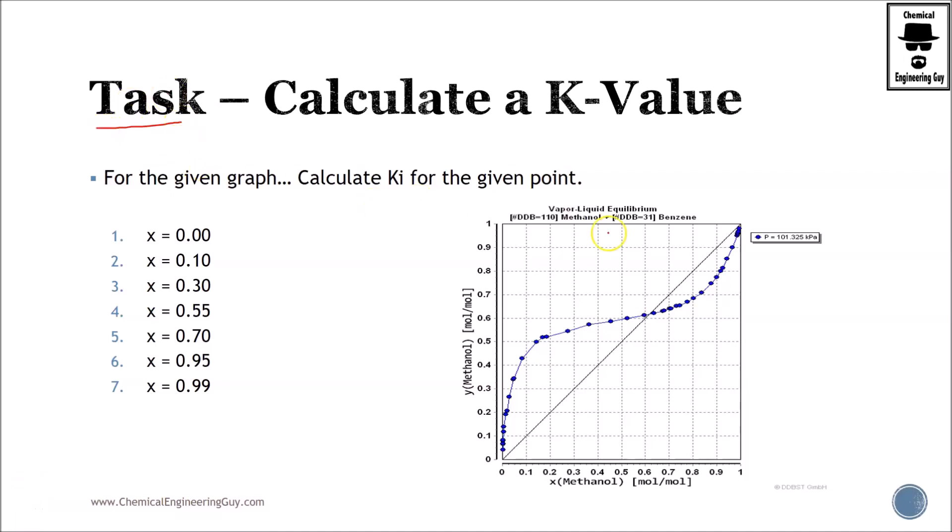Okay, so in this task we need to calculate the K value of these species in the given mixture. So in theory, if we don't know what we're talking about, first things first we need to read this diagram. In this x-axis we have the molar composition of methanol.